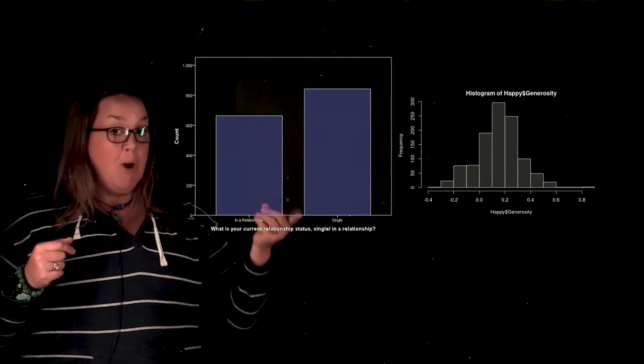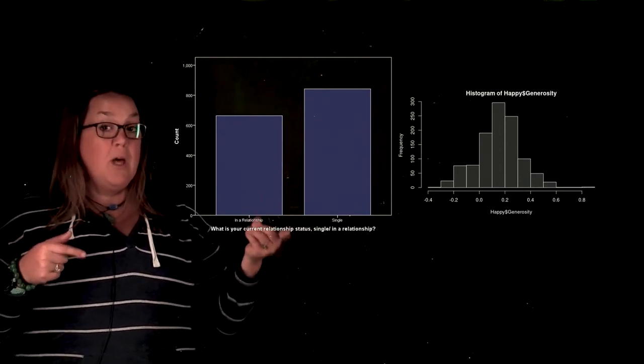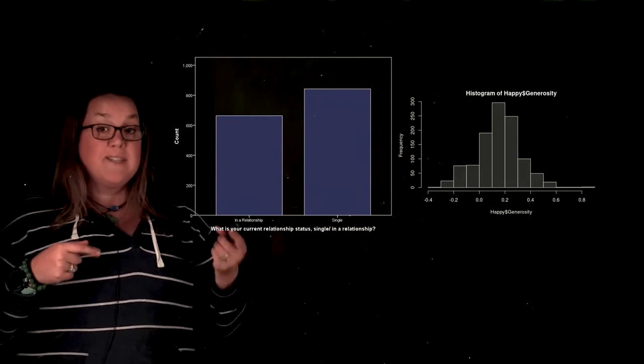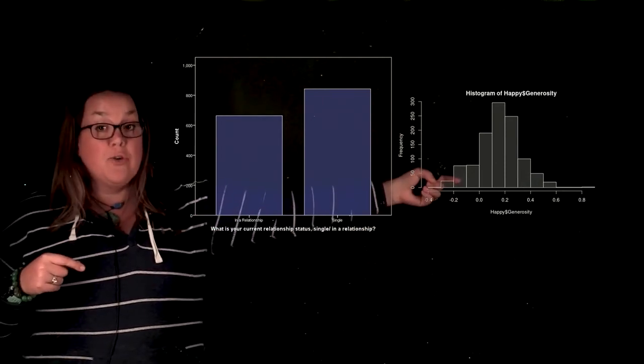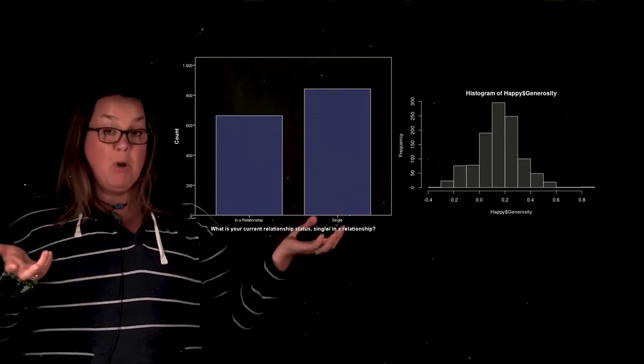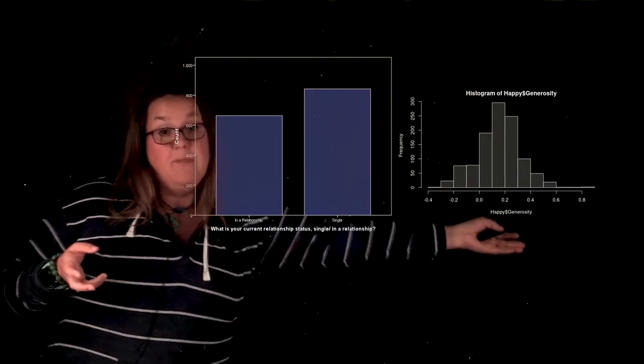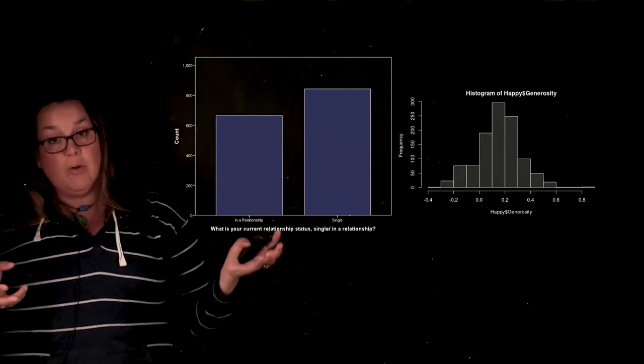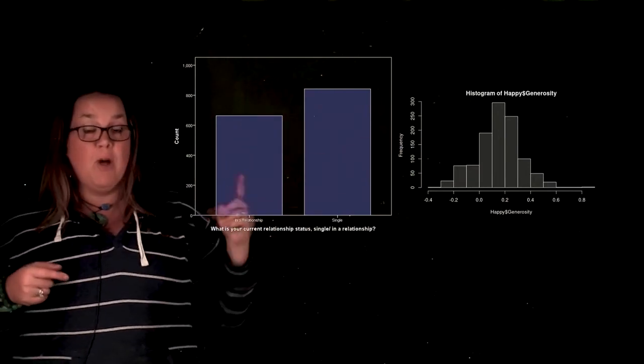Remember a bar graph still has bars, but the x-axis, so this horizontal axis is categories. Whereas here a histogram, the x-axis, the horizontal axis is a number line because this is for quantitative data. This is for categorical data. So a bar graph and a histogram are not the same thing.